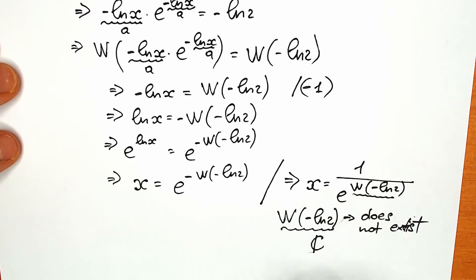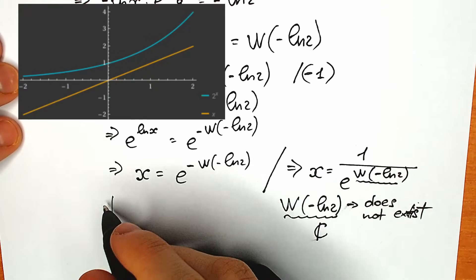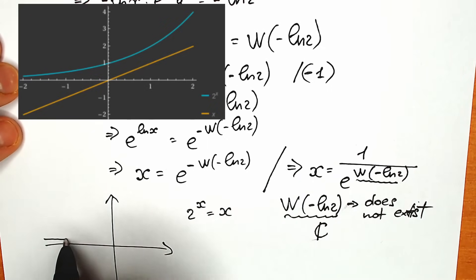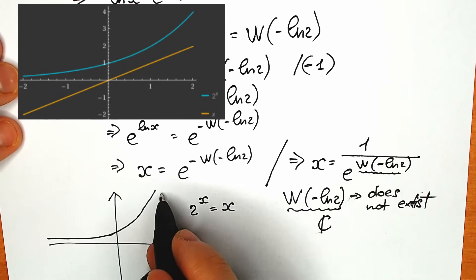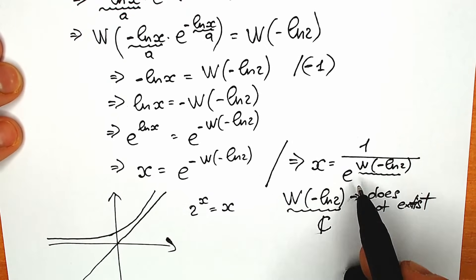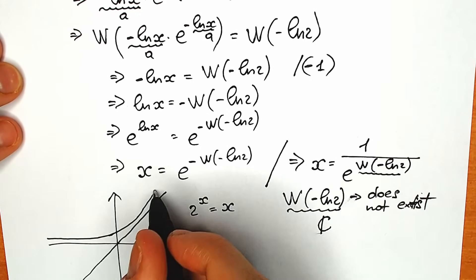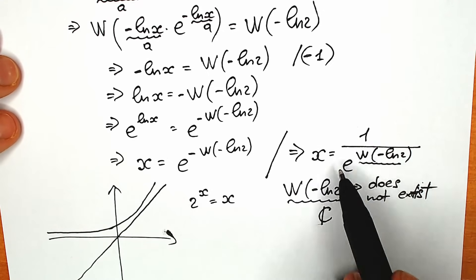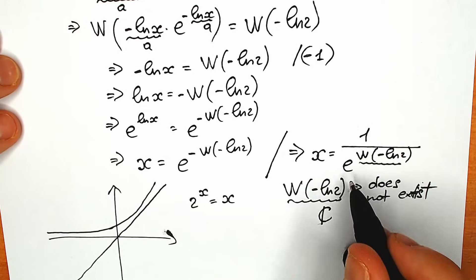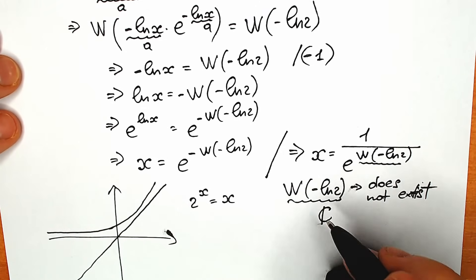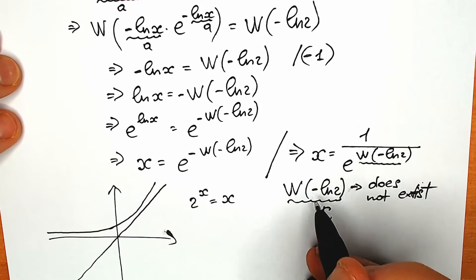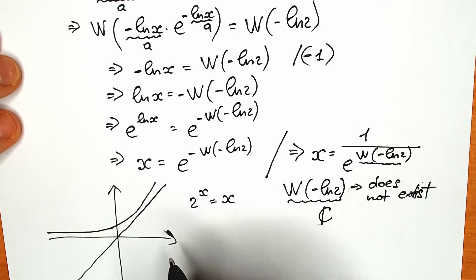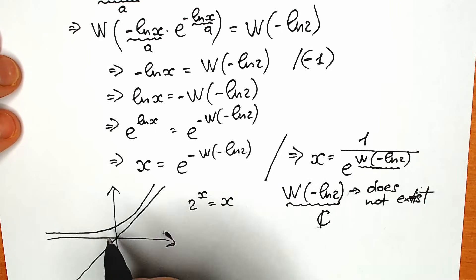So this root is complex. In terms of geometry, if the root is complex it means the two graphs do not intersect each other. We have 2 to the x, which is an exponential function, and x, which is a linear function. Since the root is complex, these two graphs do not intersect. You can verify this using a graph from an internet math library.